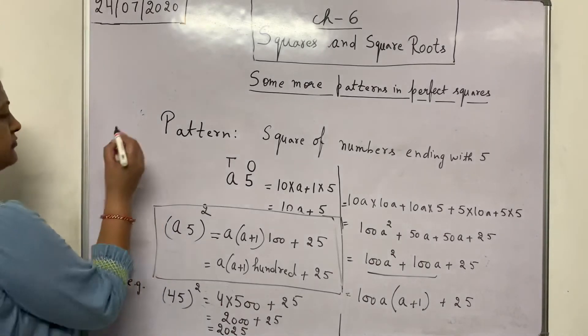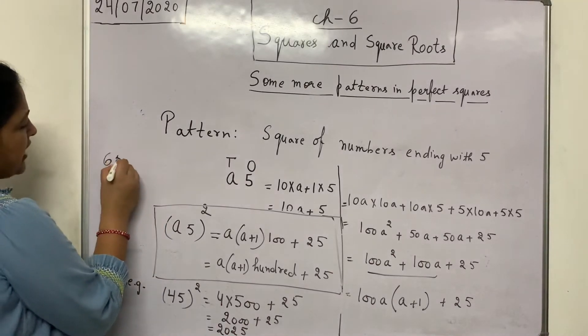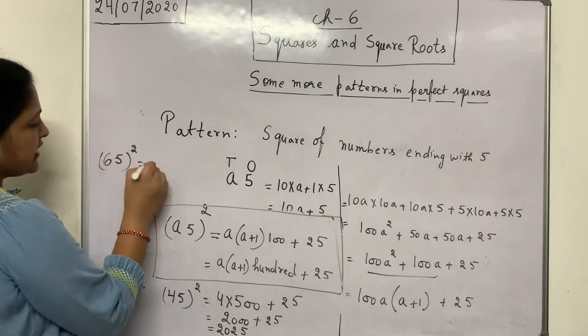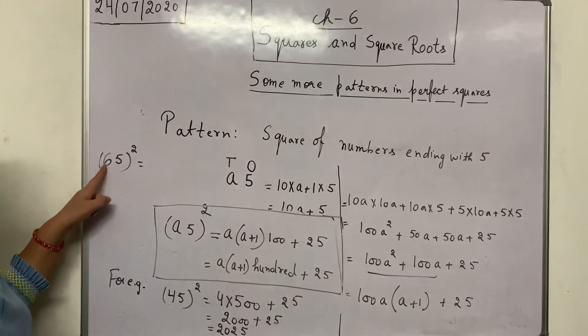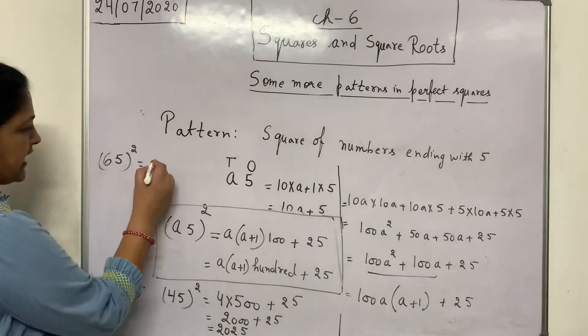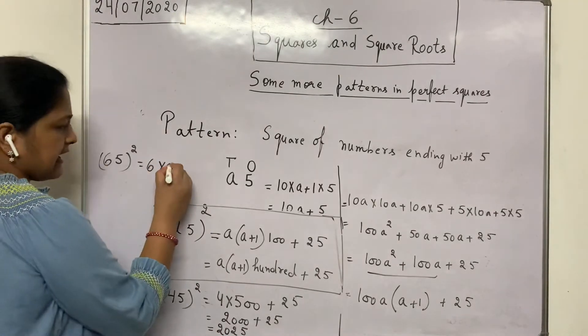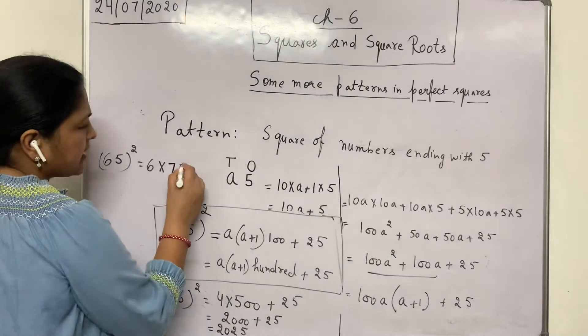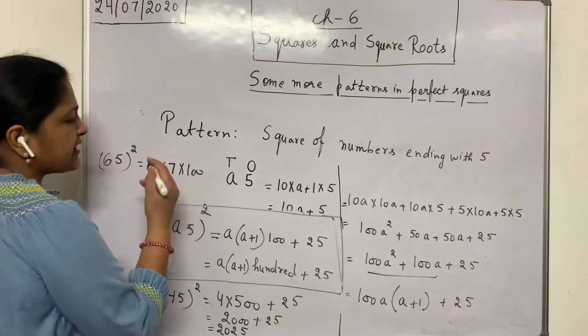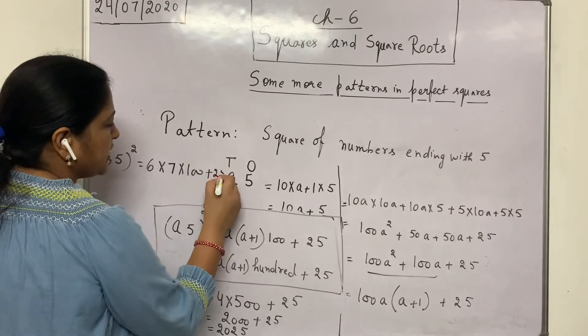See one more. 65 whole square. What is the value of a? 5 is fixed. A is 10th place digit. A into a plus 1, 100. So directly you can put two zeros or you can multiply by 100. And plus 25.